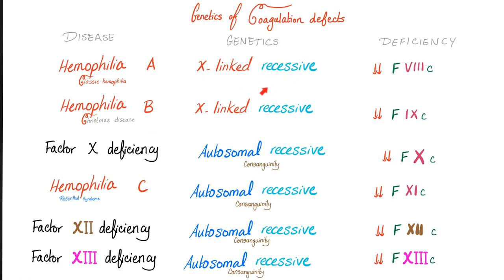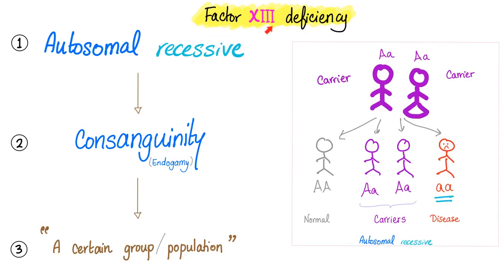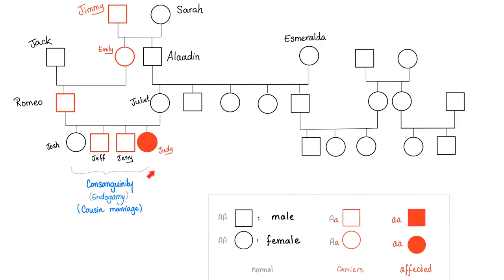Hemophilia A and B are X-linked recessive. All other coagulation disorders are autosomal recessive — hashtag consanguinity. Factor 13 deficiency is autosomal recessive, therefore associated with consanguinity and therefore a certain population. In this case it's Iranians — specifically southeastern Iran, which has higher rates of consanguinity. This is why consanguinity is related to autosomal recessive diseases.